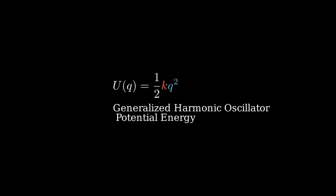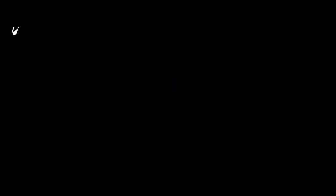Generally, a simple harmonic oscillator is a physical system with the following potential energy. Here, Q is some generalized coordinate. It could be position, charge, or any other parameter that we use to describe our system.